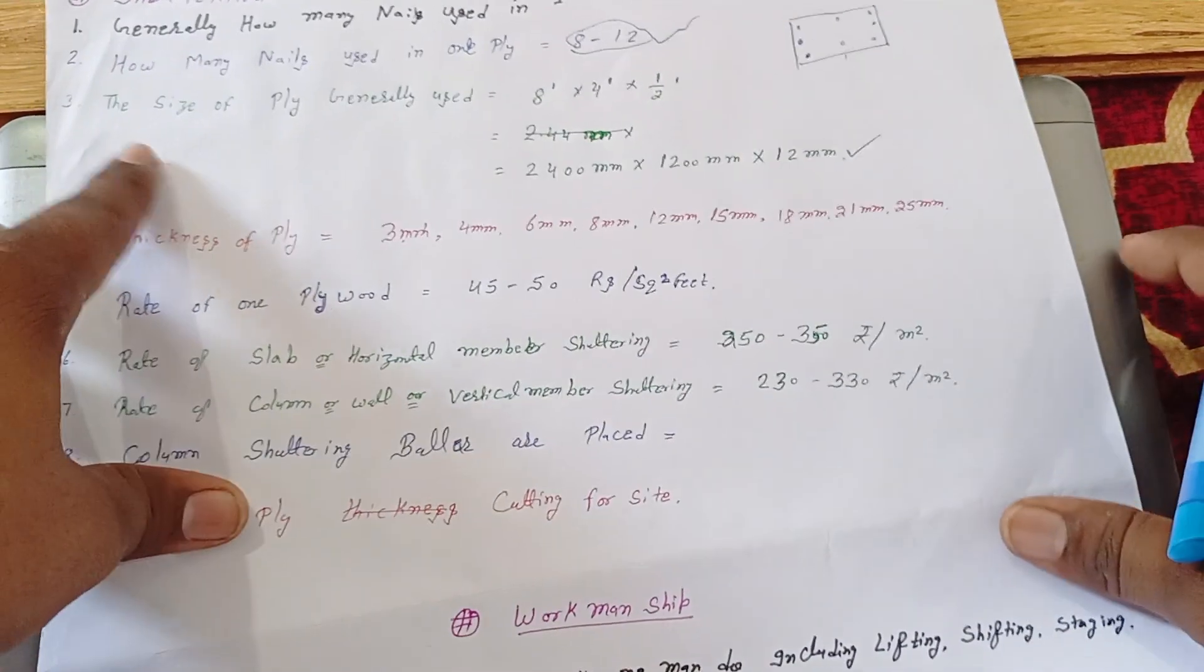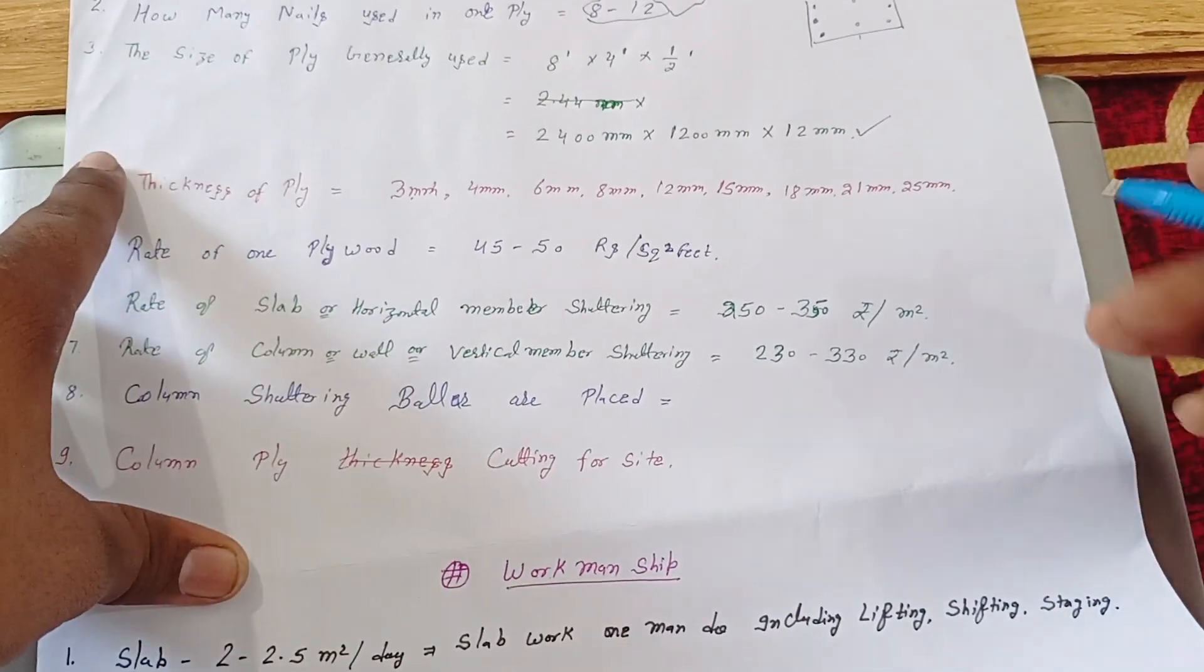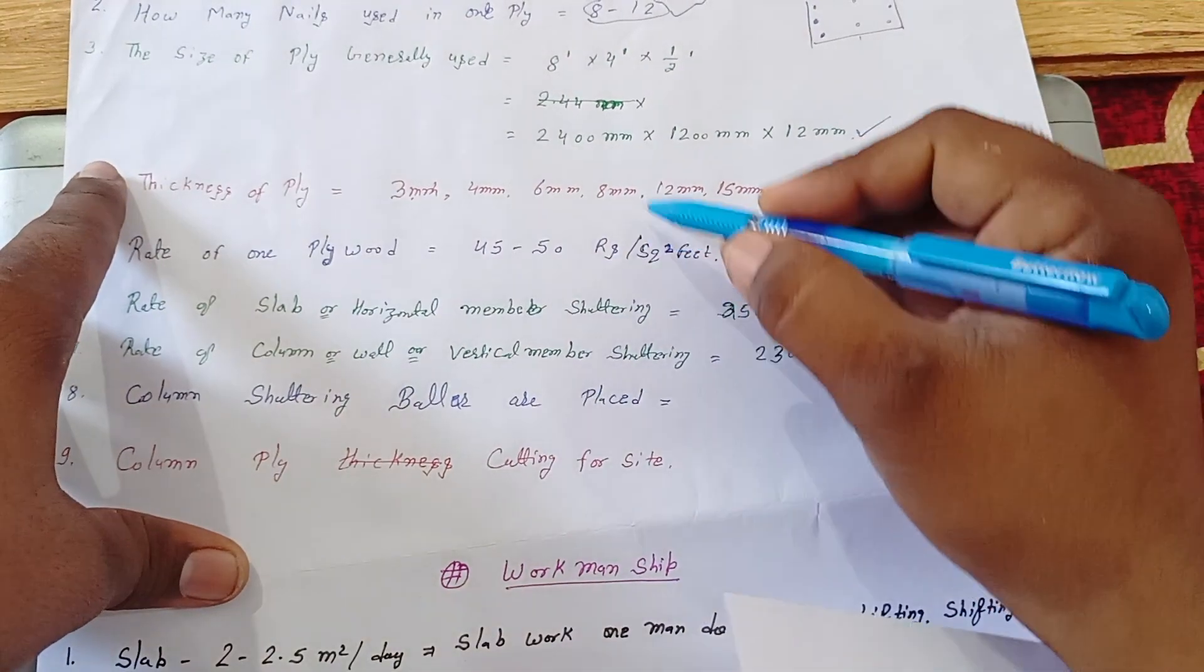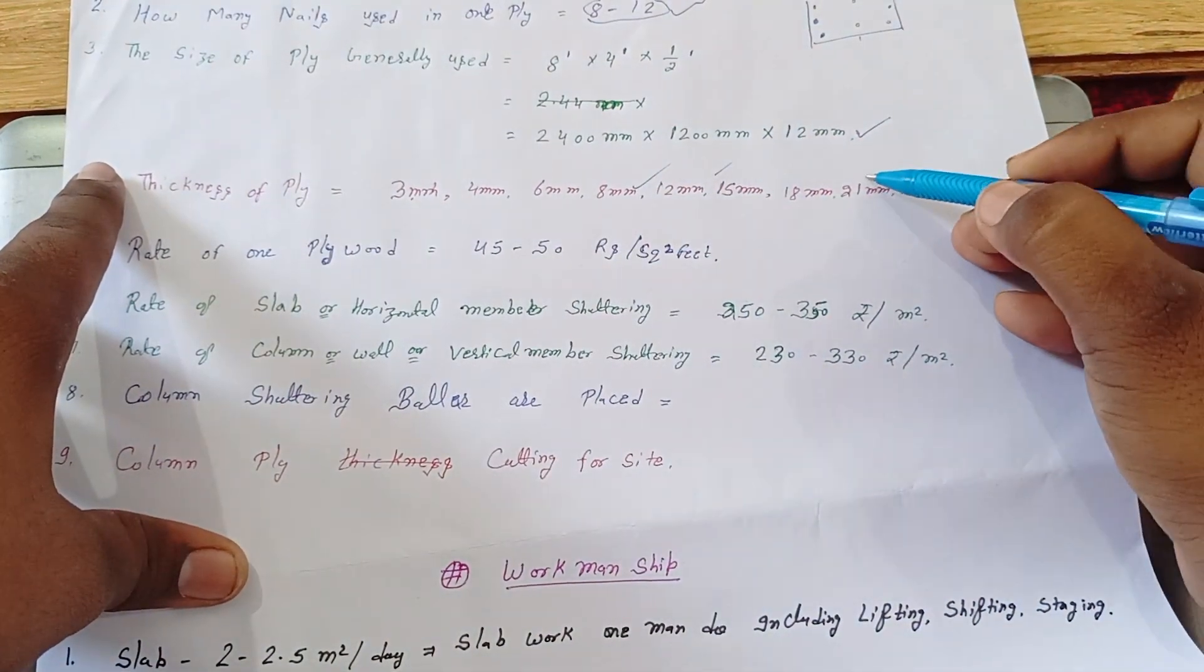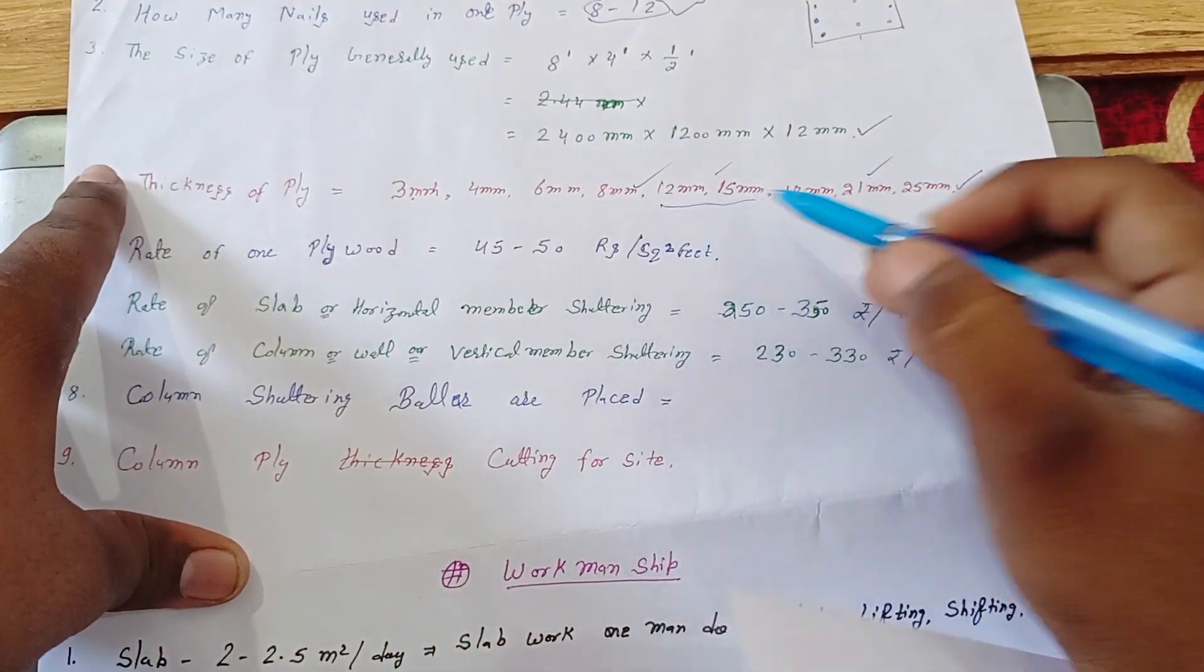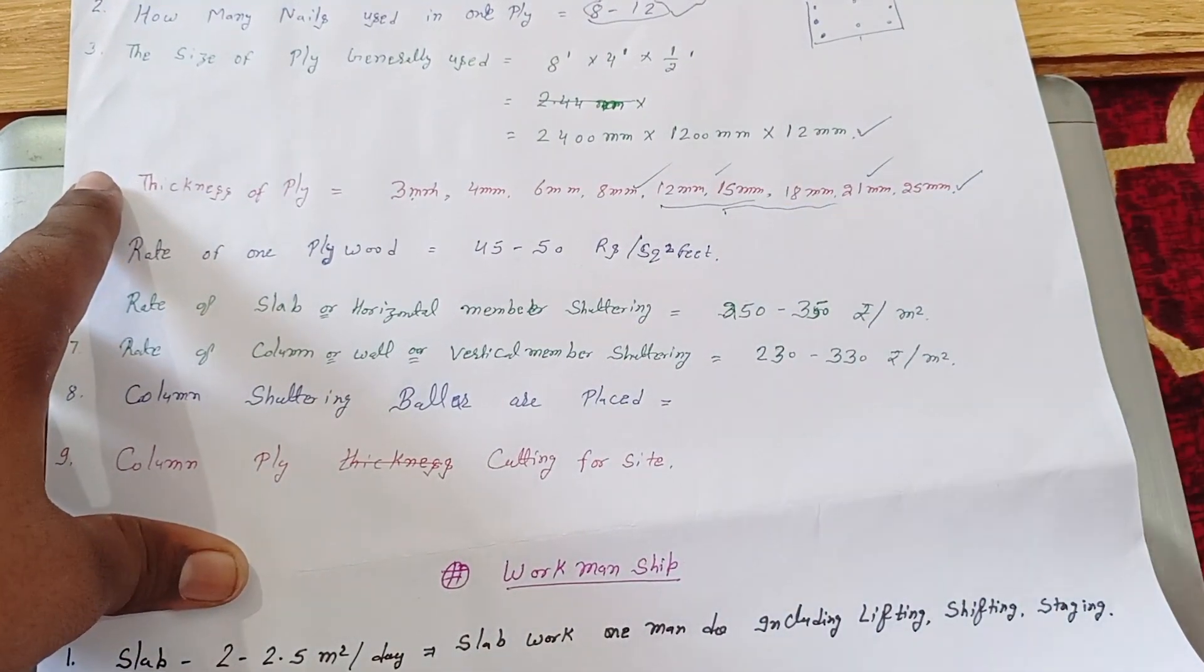They can ask thickness of ply. Generally thickness of ply is called 3mm, 4mm, 5mm, 8mm, 10mm, 12mm, 21mm, 25mm. So generally we use 12mm, 15mm, 18mm in construction site.